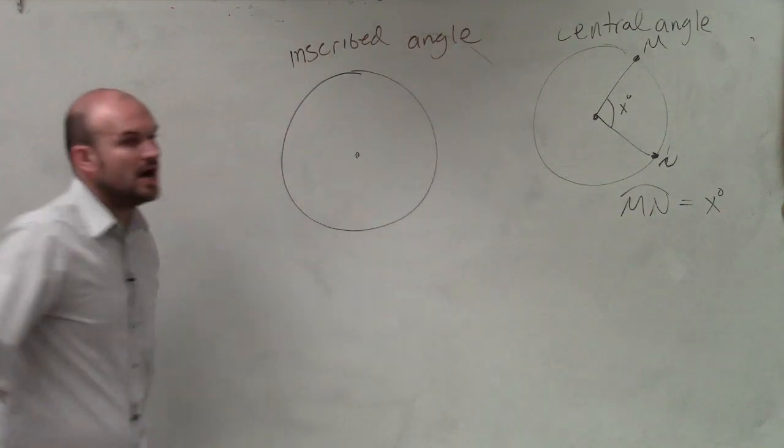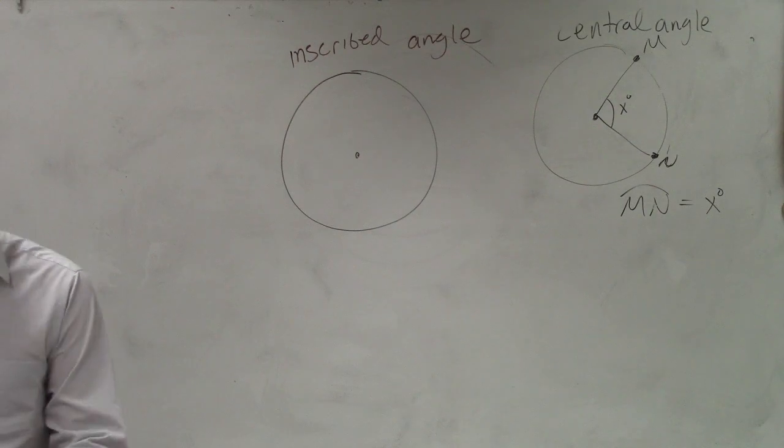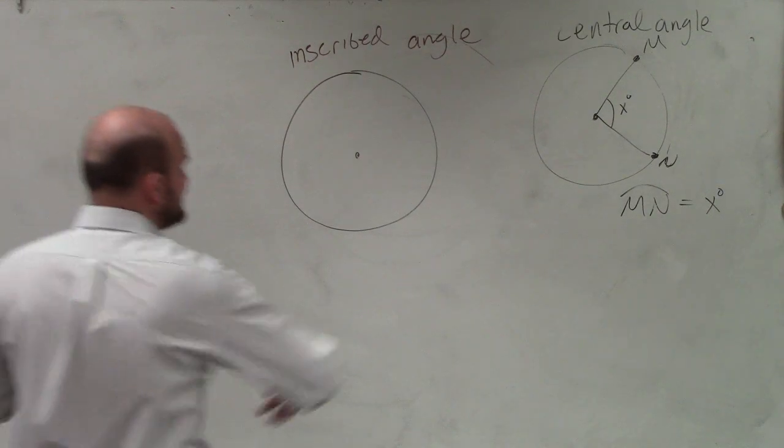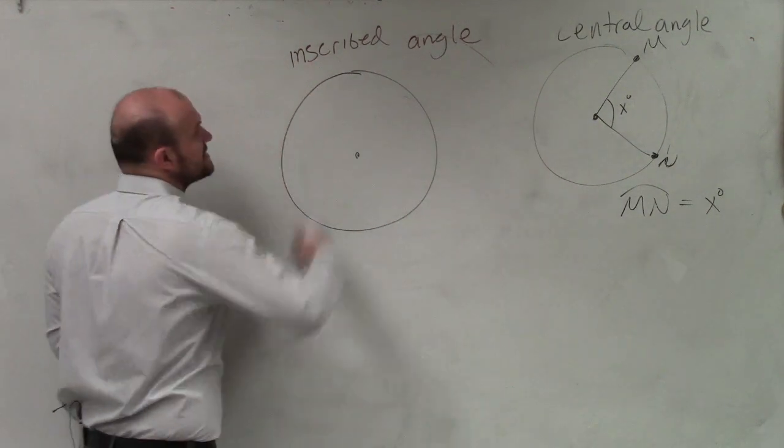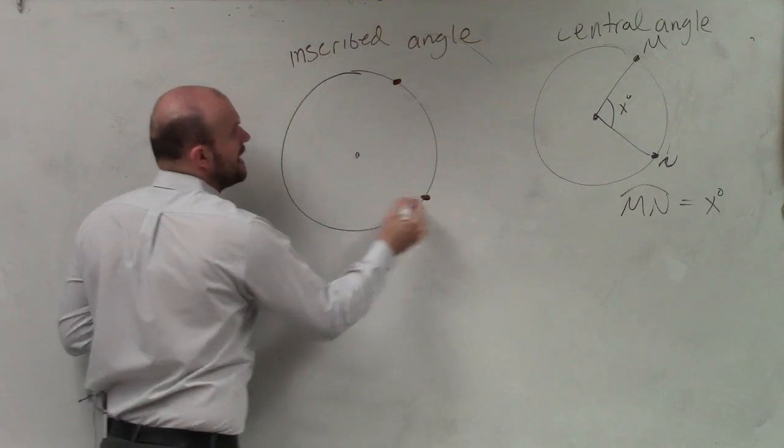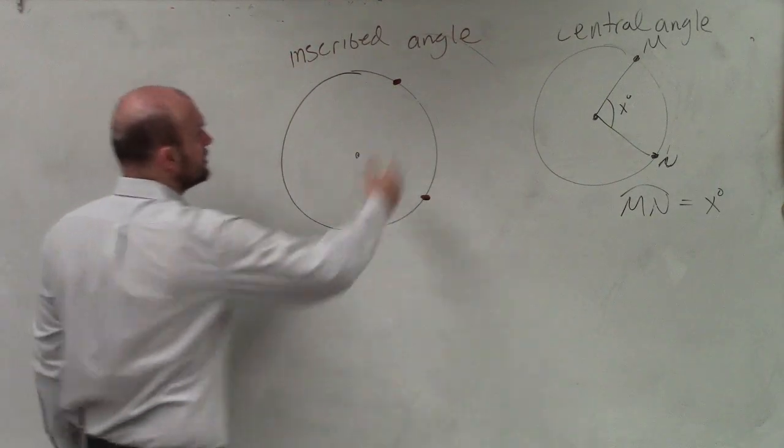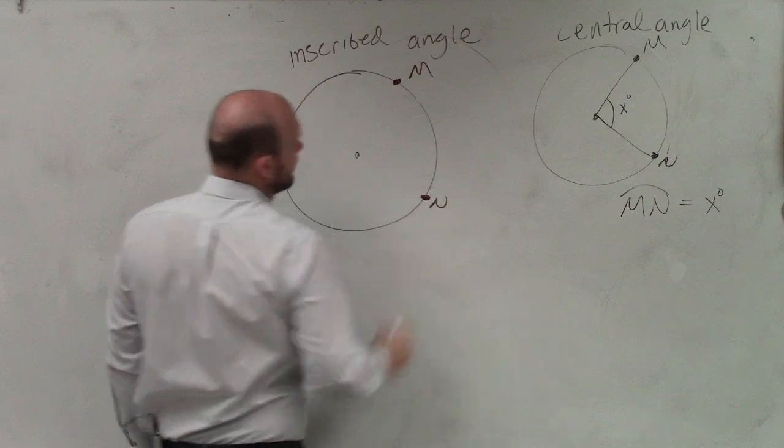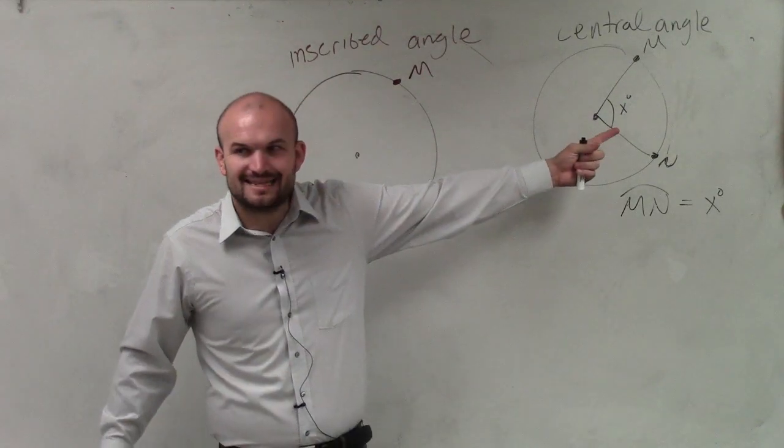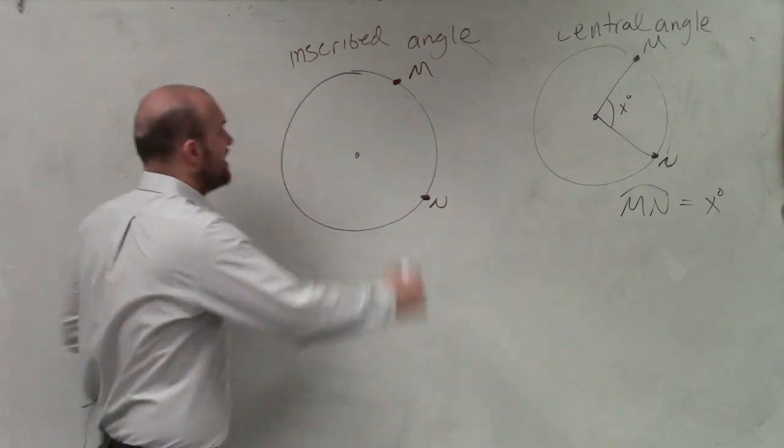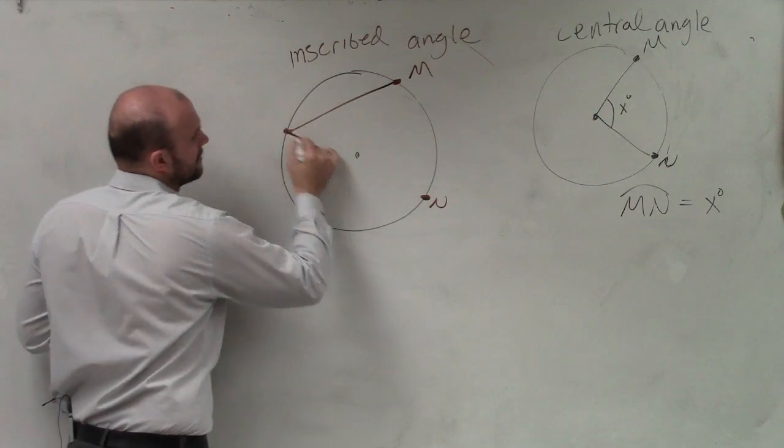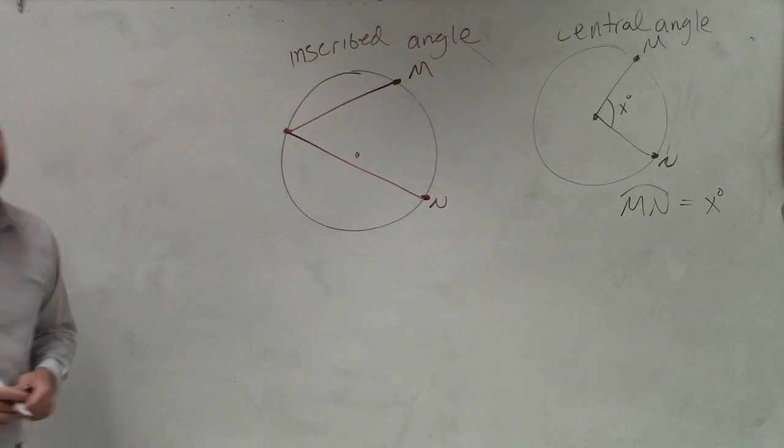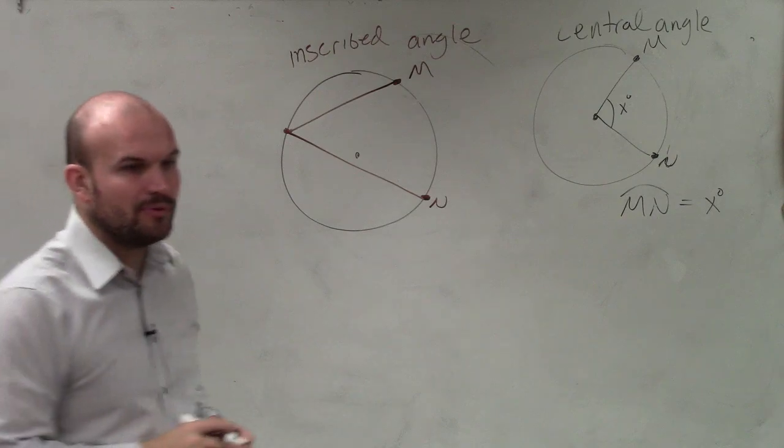When talking about an inscribed angle and how it differs from a central angle: an inscribed angle still has two endpoints on your circle. However, rather than having the vertex at the center, you now have a vertex on the circle as well as the two endpoints.